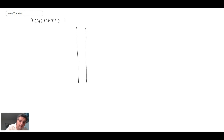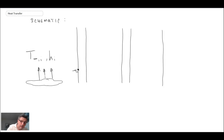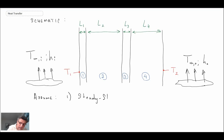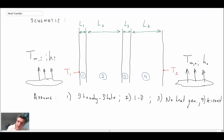With those assumptions, we'll construct a schematic with coordinates, lengths, and relevant information. We have the convective environments on either side and the wall in between. The required assumptions to apply thermal resistances are: steady-state, one-dimensional conduction; no internal heat generation; and k is constant for all materials.